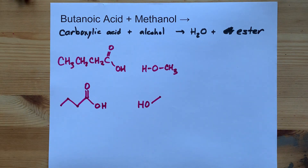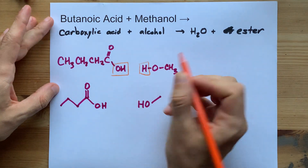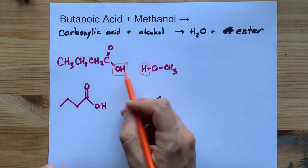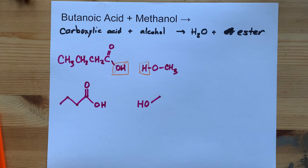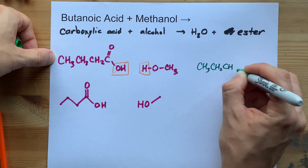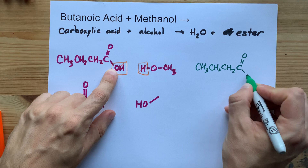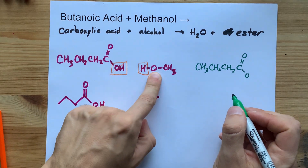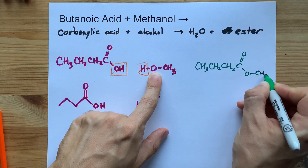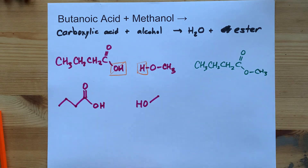What happens in esterification is that the OH of the carboxylic acid group and the H from the alcohol don't directly react, but they end up getting eliminated — that's what forms the water. You're left with the entire carbon chain from the carboxylic acid with the double-bonded O, but instead of the OH, you're connected to an O that still has the CH3 on it. This carbon with a double-bonded O and a single-bonded O that has more carbons at the end is an ester by definition.